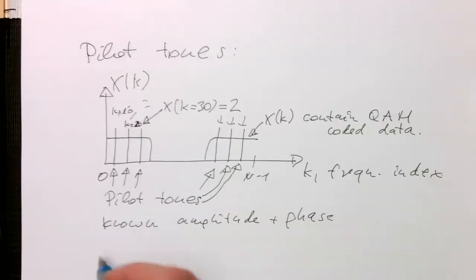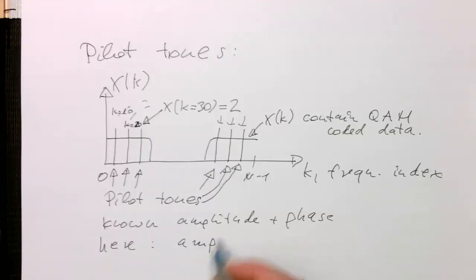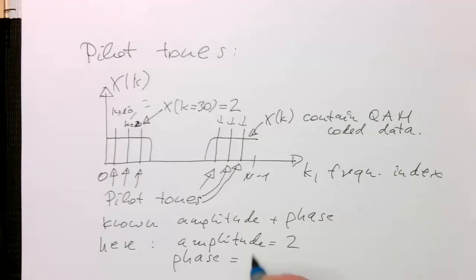So here we have amplitude 2, amplitude is 2, and phase is 0 degrees. So essentially we have a pure real number.